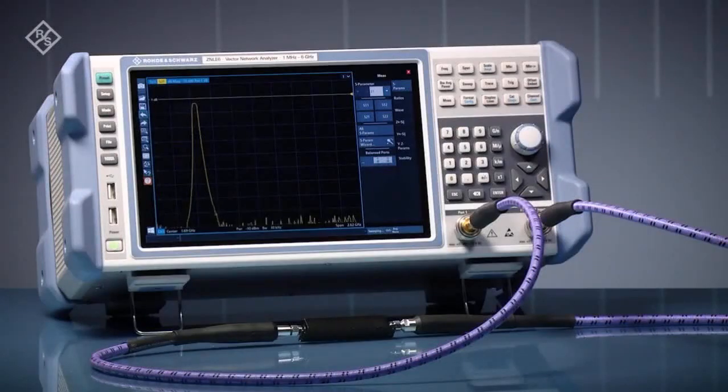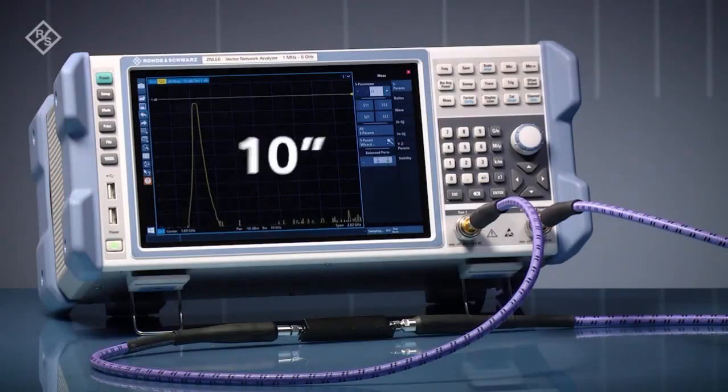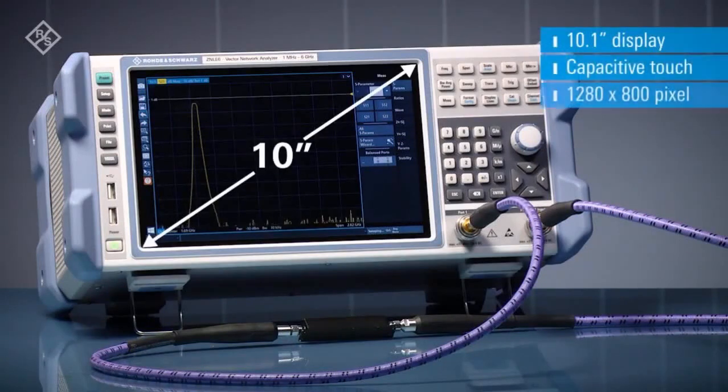The Rohde & Schwarz ZNLE Vector Network Analyzer features a wide 10.1-inch touch screen. Its multi-touch feature lets you conveniently operate the instrument.